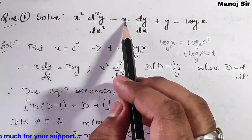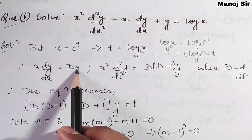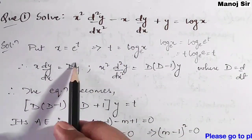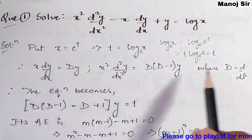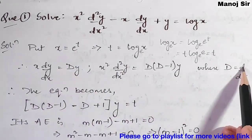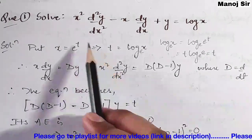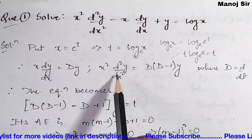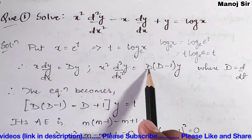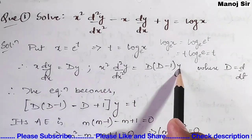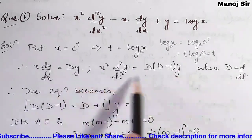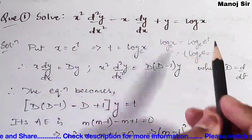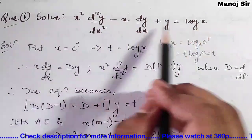With this substitution, x d/dx is replaced with capital D, where capital D means d/dt. Similarly, x squared d²y/dx² is replaced with D(D minus 1) times y. After replacing all terms in the original equation — call it equation one — we can transform it into a new form.